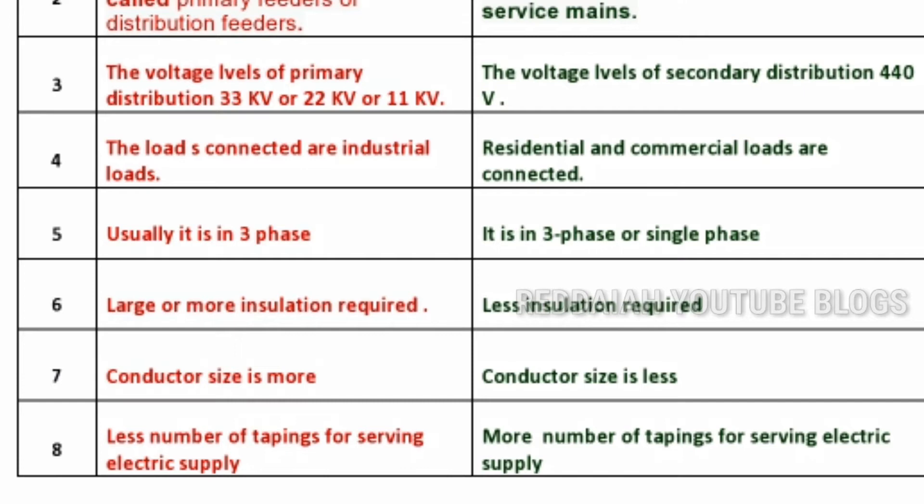The conductor size in the primary distribution system is larger because large currents flow through it. In the secondary distribution system, the voltage levels are lower and the conductor size is also smaller.